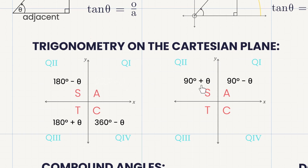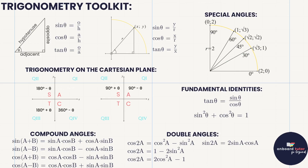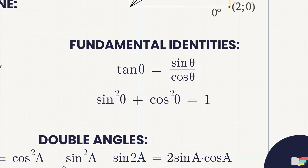A special note: if we're dealing with 90 plus or 90 minus, those are co-functions — sin becomes cos and cos becomes sin — and you just need to make sure of whether that would be positive or negative depending on which quadrant you're working with. We've also become quite familiar with the fundamental identities: tan θ equals sin θ over cos θ, so we can substitute that out, and sin² θ plus cos² θ equals 1.